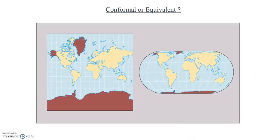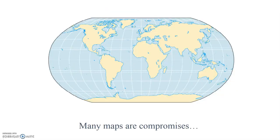So which one is conformal and which one is equivalent? What does each map do a good job with, and what characteristic is distorted? Notably, many projections are compromises — they're neither 100% conformal nor 100% equivalent. This is the Robinson projection, and it does a pretty good job with both shape and size, though neither is 100% accurate.